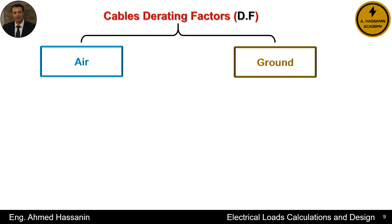We must understand that the values of derating factors (DF) depend on the cable's laying and installation method. For example, if cables are buried in the ground, the derating factors will differ from those for cables placed in the air, which means that current carrying capacity calculations will also vary. Cables are subjected to thermal effects due to their placement in air or underground, as well as the electric current flowing through them. Therefore, derating factors are crucial in electrical load calculations, and we must carefully select the appropriate values.